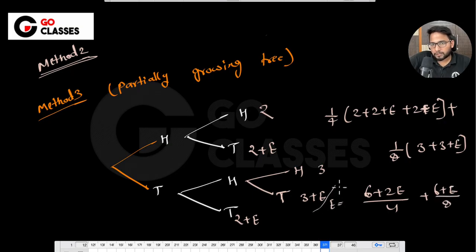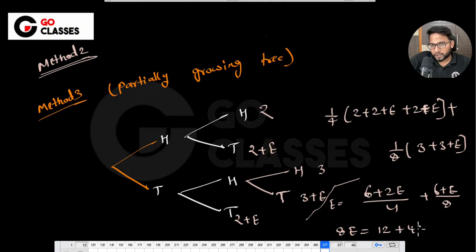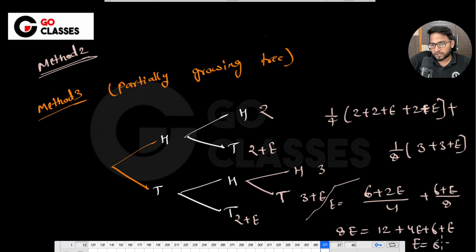Solving: 8E = 12 + 4E + 6 + E... which gives 3E = 18, so E = 6. From Method 3 also you get E = 6. I hope you understood this.